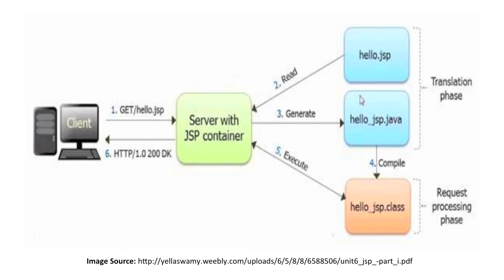Looking at another diagram related to the JSP life cycle: in Step 1, the client invokes 'hello.jsp', which is stored on the server in the JSP container. In Step 2, the server reads hello.jsp and, in the translation phase, converts it into 'hello_jsp.java' — a dot Java file. This first phase is called the translation phase.